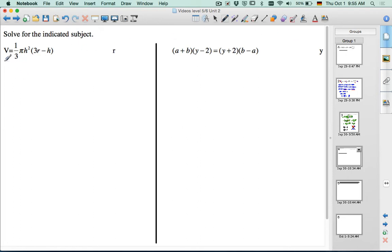So first, let's try to get rid of this part. There's a 1/3 there, so I'm going to multiply both sides by 3. So, I get 3V = π h²(3r - h), and I'm going to divide both sides by π h². You don't need the brackets here, but I'm going to leave that on there.